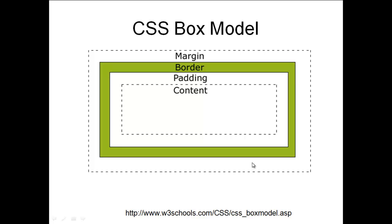We're going to take a look at the CSS box model. The box model helps to define the spacing around our content — content could be anything: a photo, words, something like that. It's probably the most common concept. We have three things to worry about: the content itself, and then the padding. The padding is the spacing between the content and the border.